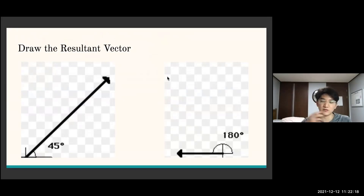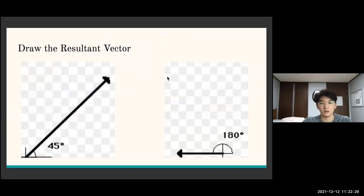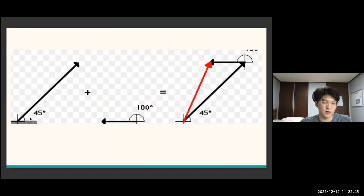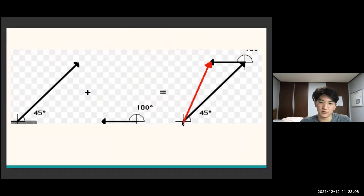Here's an example problem: draw the resultant vector of the two vectors shown. For this, let's say the first vector is here and the second vector is here. Place the tail of the second vector right next to the head of the first — it forms this shape. Then connecting tail to head gives you the resultant vector of these two vectors.